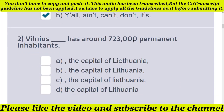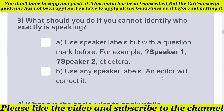Second question: the city has around 7,200,000 permanent inhabitants. There are four different options. The correct option is B — 'the capital of Netherlands.' This is the correct spelling of Netherlands. That's why the second question answer is option B.